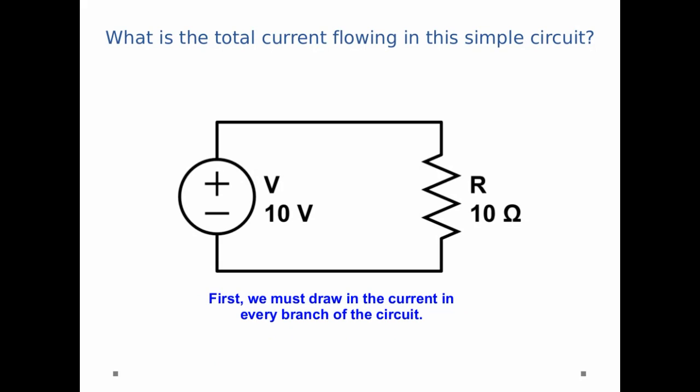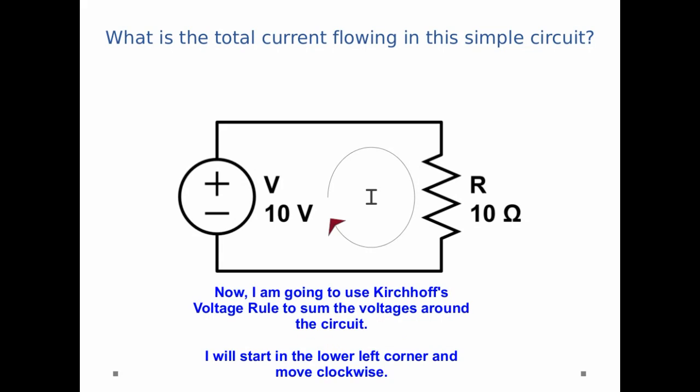First, I need to draw a current in every branch of the circuit. Since there's only one branch, there's only one loop, I'm going to guess that the current flows clockwise, and I've drawn it in the diagram. Now I'm going to use Kirchhoff's voltage rule to sum the voltages around the circuit. I'll start in the lower left-hand corner, just below the battery, and I'll move in a clockwise direction.